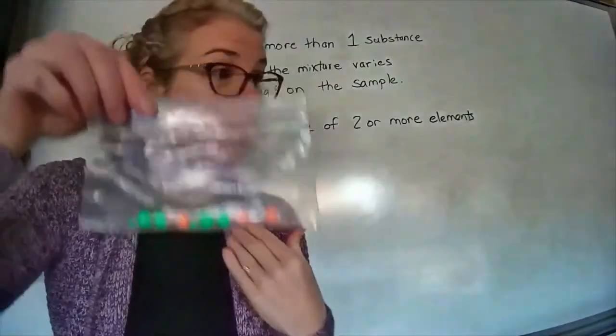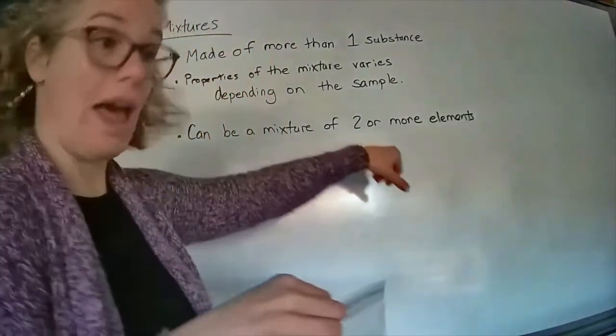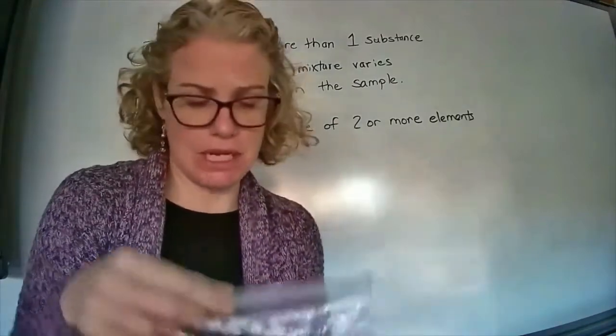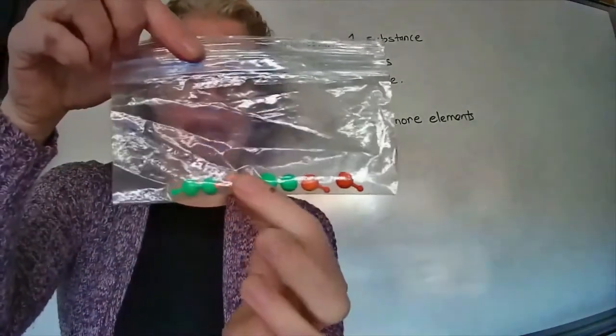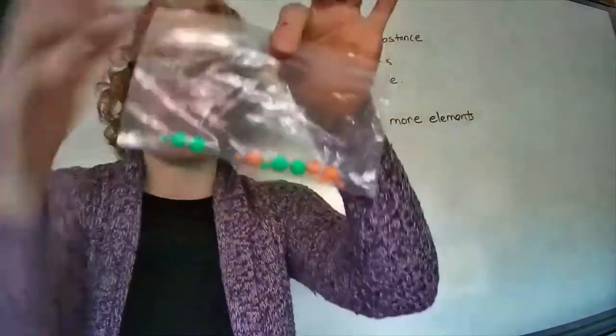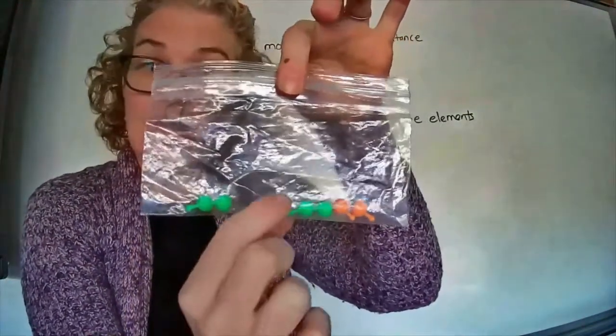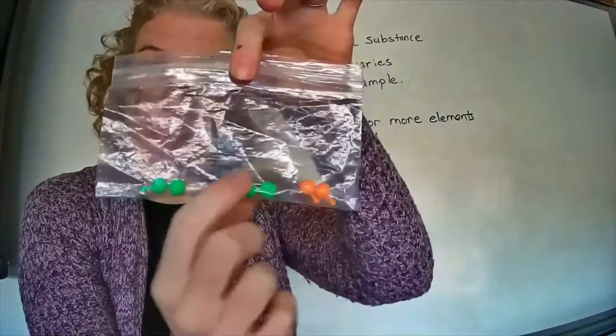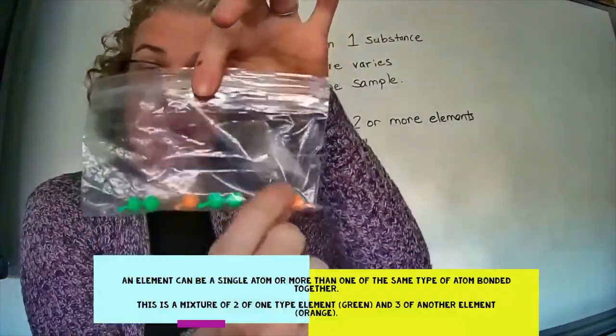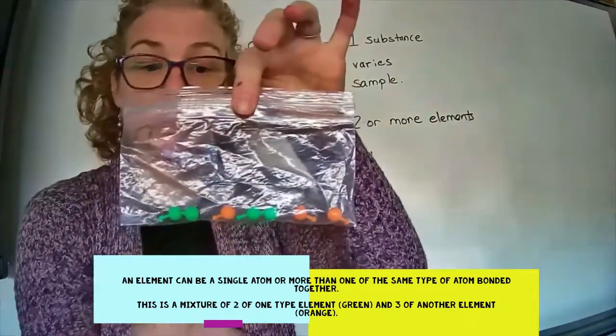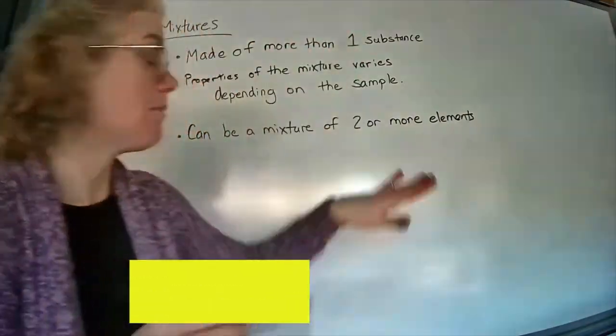A mixture could be made up of more than one element in a bag or in a beaker. Here would be a visual representation of it. Here we have maybe something like oxygen that binds to itself, but that would still be an element, and this would be an element, and then we have another sample of oxygen and another sample of an individual element. So two or more elements can be a type of mixture.